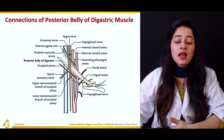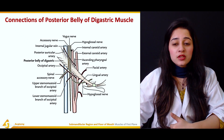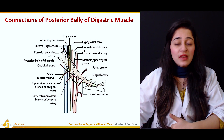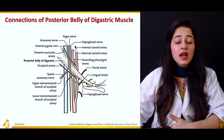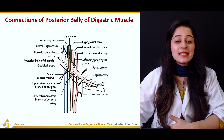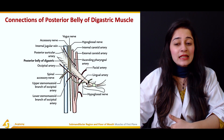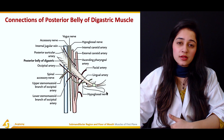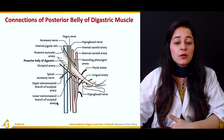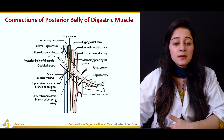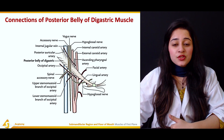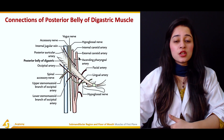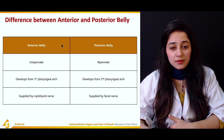To summarize the relations: the posterior belly of the digastric muscle has anteriorly the vagus nerve, internal and external carotid arteries, hypoglossal nerve, ascending pharyngeal artery, facial artery, and lingual artery. Posteriorly it has the sternomastoid branches of the occipital artery, spinal accessory nerve, occipital artery, posterior auricular artery, and internal jugular vein.